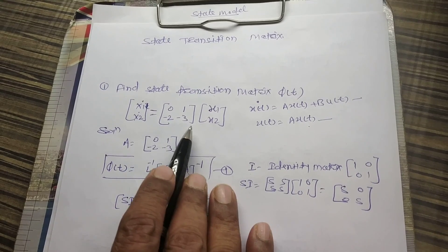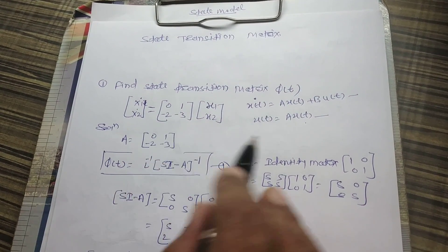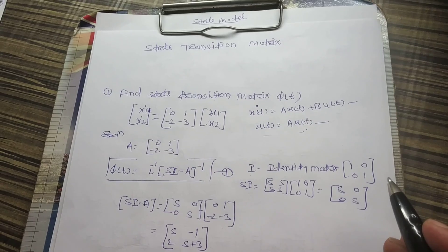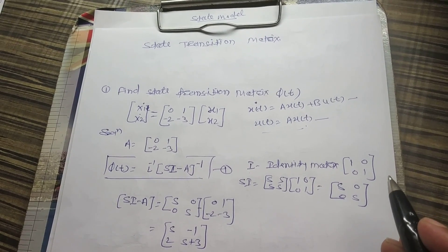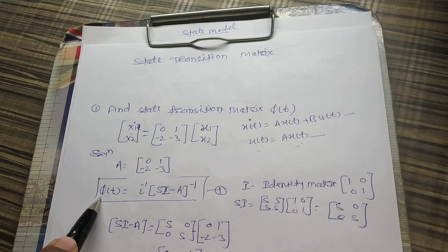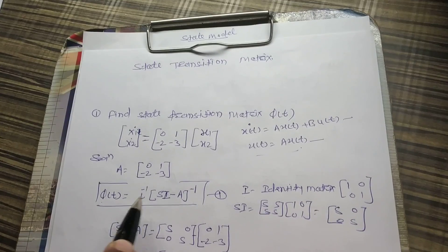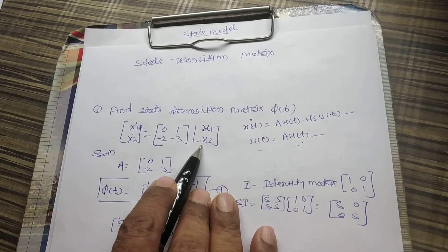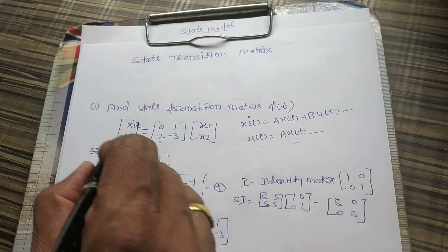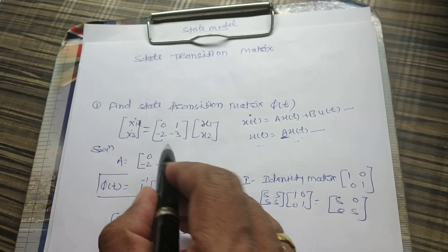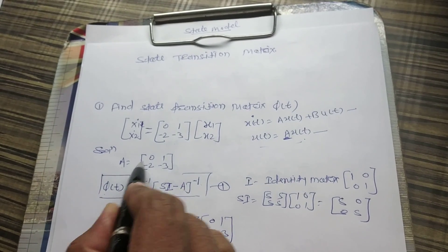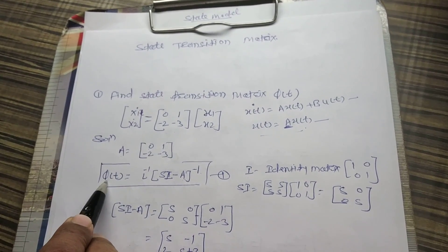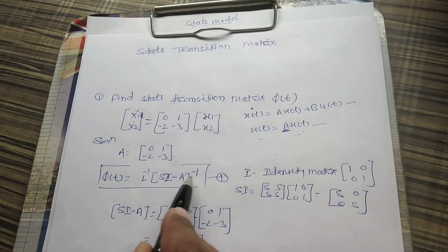The equation is already given in the form of the linear homogeneous equation. From the statement we need to find the state transition matrix. We define the state transition matrix as φ(t) equals the Laplace inverse of (sI - A) whole inverse — that is our aim. In the given system, x-dot of t equals A·x(t), so the matrix A is given as [0, 1; -2, -3]. Now we will find φ(t) equals Laplace inverse of (sI - A) inverse.